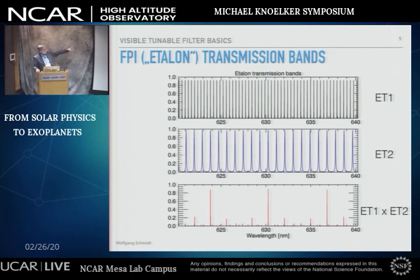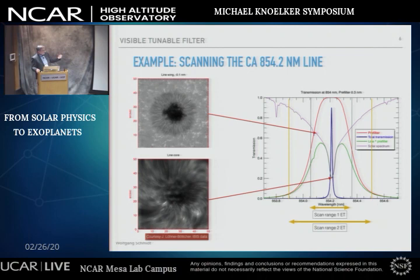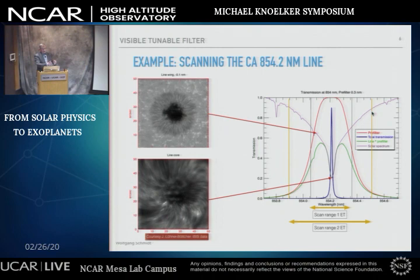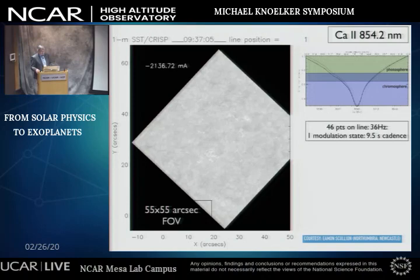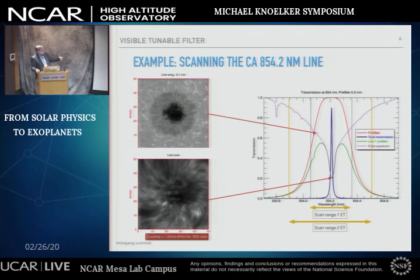In the case of the VTF, we'll start out with one of the two etalons — unfortunately the top one — and that means we need really very narrow pre-filters to suppress all but one of the transmission peaks. In the graph you can see the infrared calcium line, with the blue transmission peak being the wanted transmission peak of the instrument. You change your Fabry-Perot slightly so that this transmission peak walks back and forth across the line. In the wing of the calcium line you see photospheric behavior, and in the line core you see nicely the chromospheric behavior of the solar atmosphere.